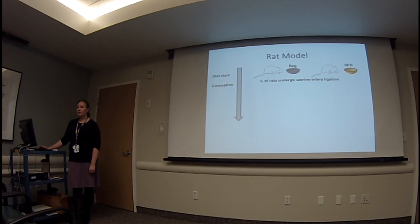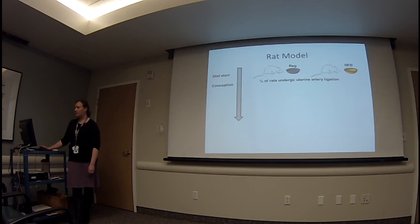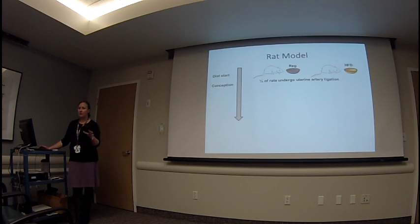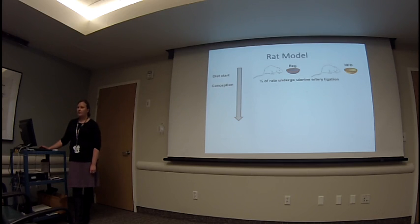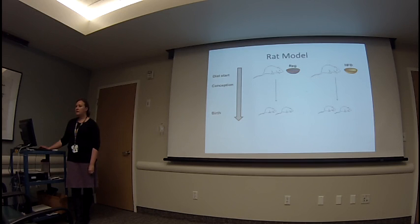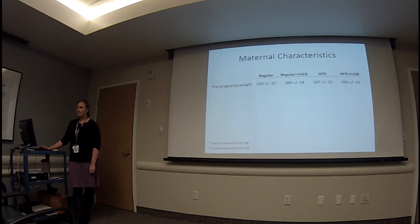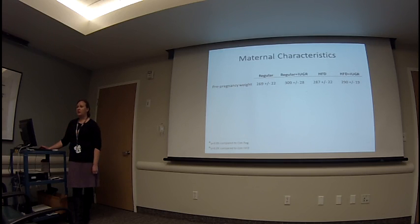In order to start chipping away at these hypotheses, I've had to start my own rat model. These rats are either on a regular rat chow or on a high-fat diet for five weeks prior to conception and throughout gestation. Half of them undergo uterine artery ligation to produce IUGR rats, and then we harvest the rat pups at birth by cesarean section. Because this is a new model, we've had to characterize the maternal and neonatal phenotypes so we can understand the system we're working in before getting down to mechanism.